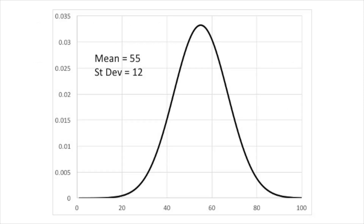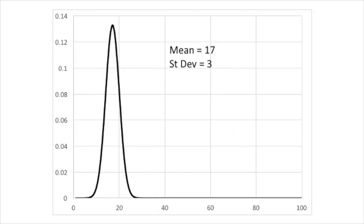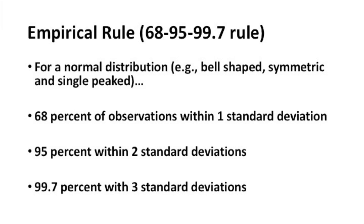Here's a normal distribution with a mean of 55 and a standard deviation of 12. Here's a normal distribution with a mean of 17 and a standard deviation of 3, so it's less spread out than the first. Of course the normal distribution follows the empirical rule, which is the 68, 95, 99.7 rule.